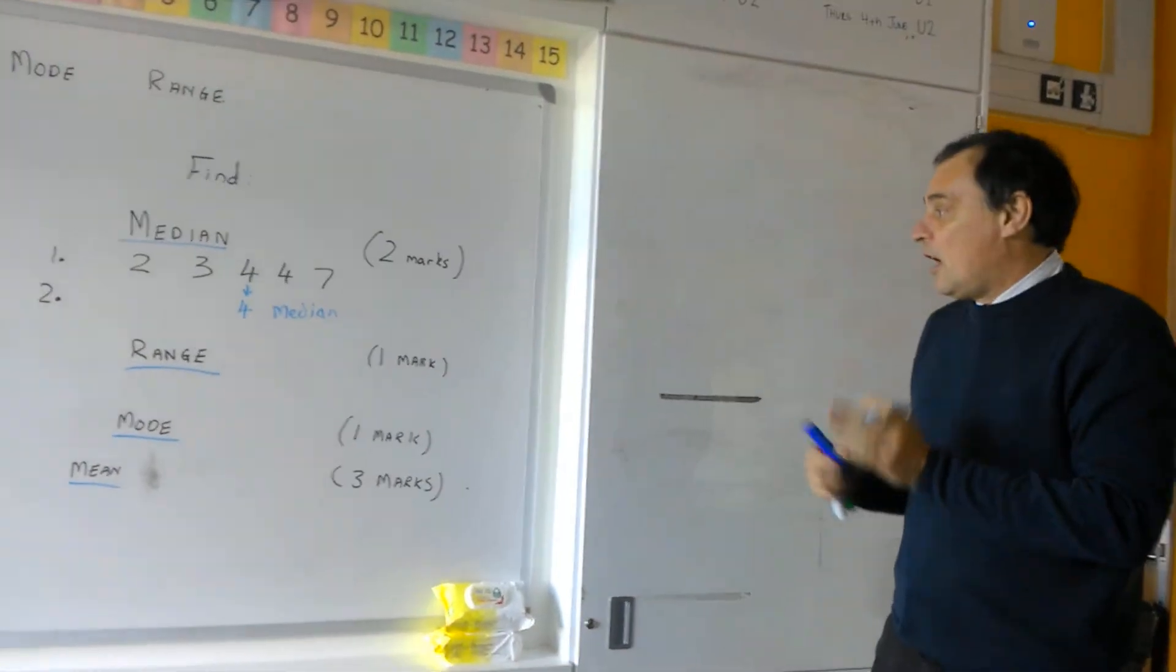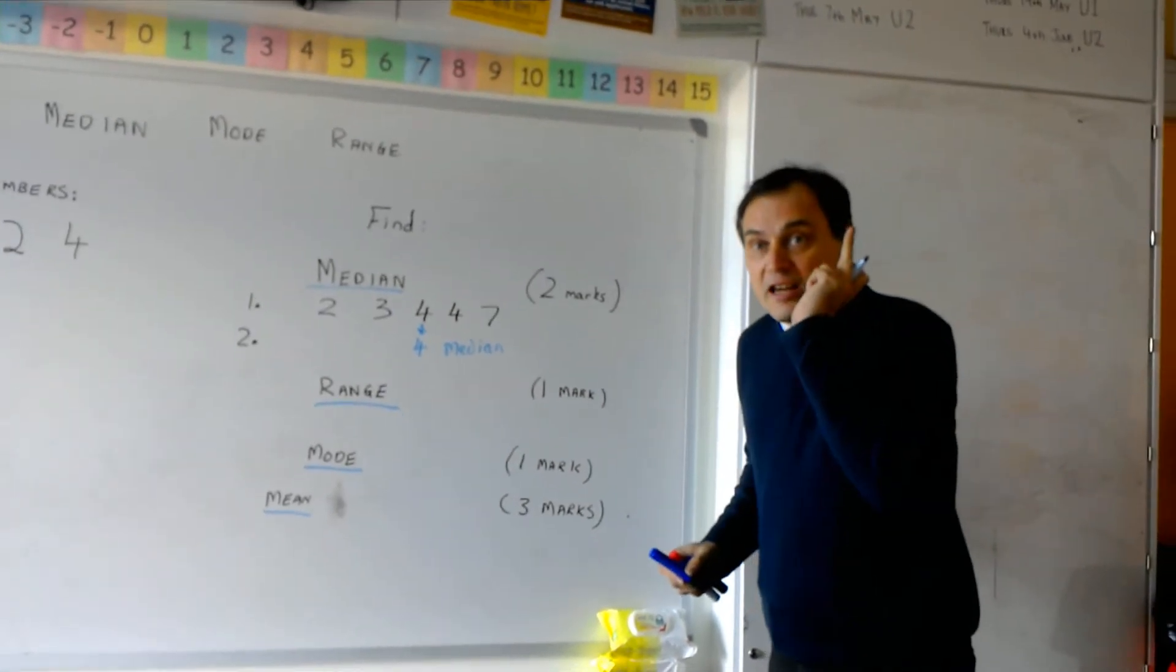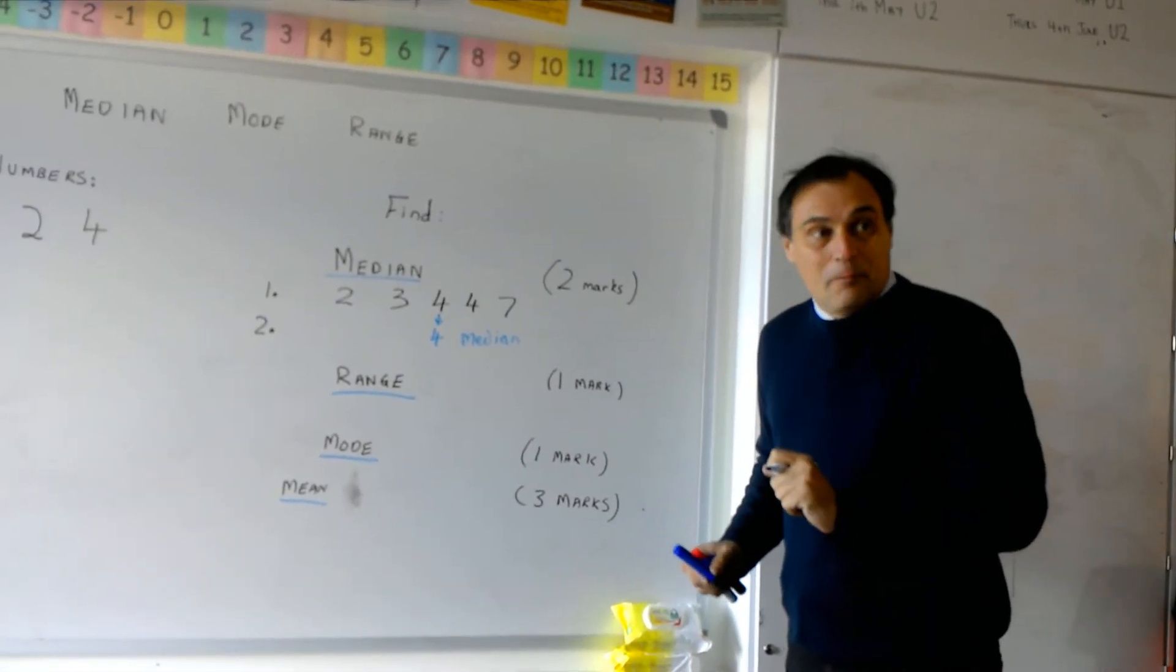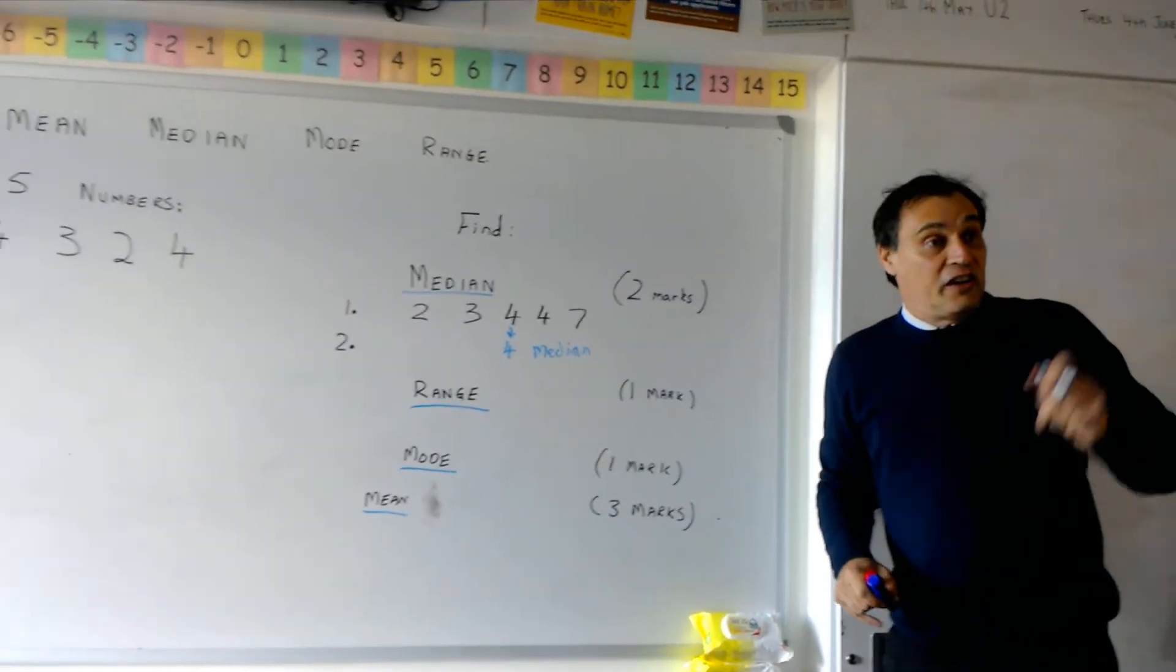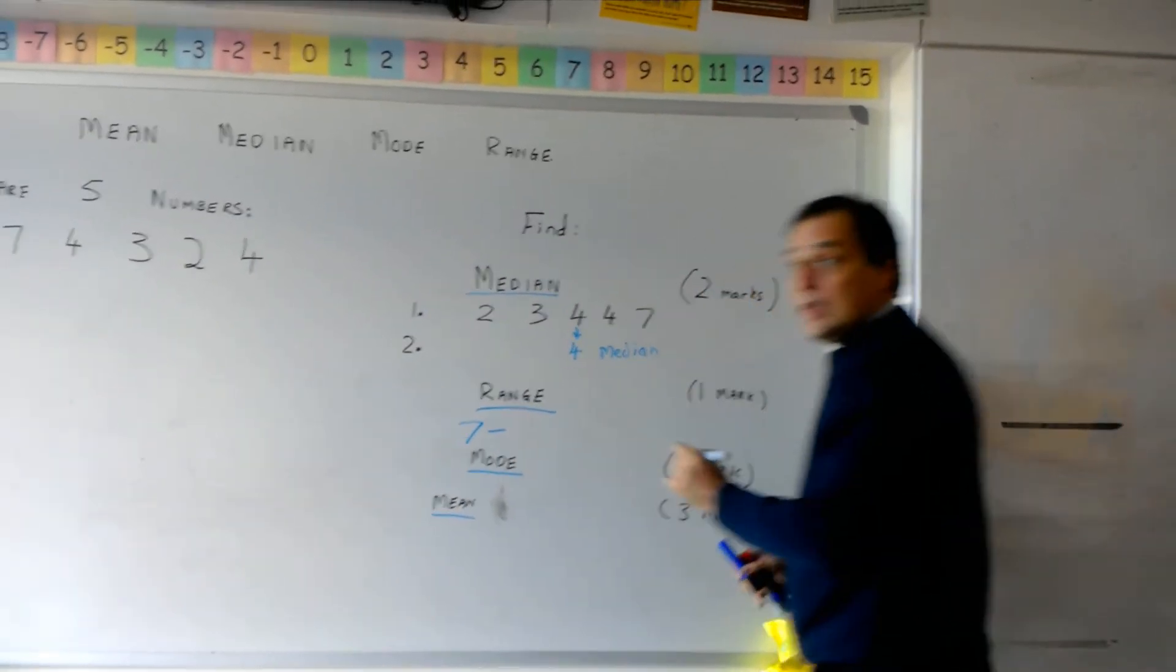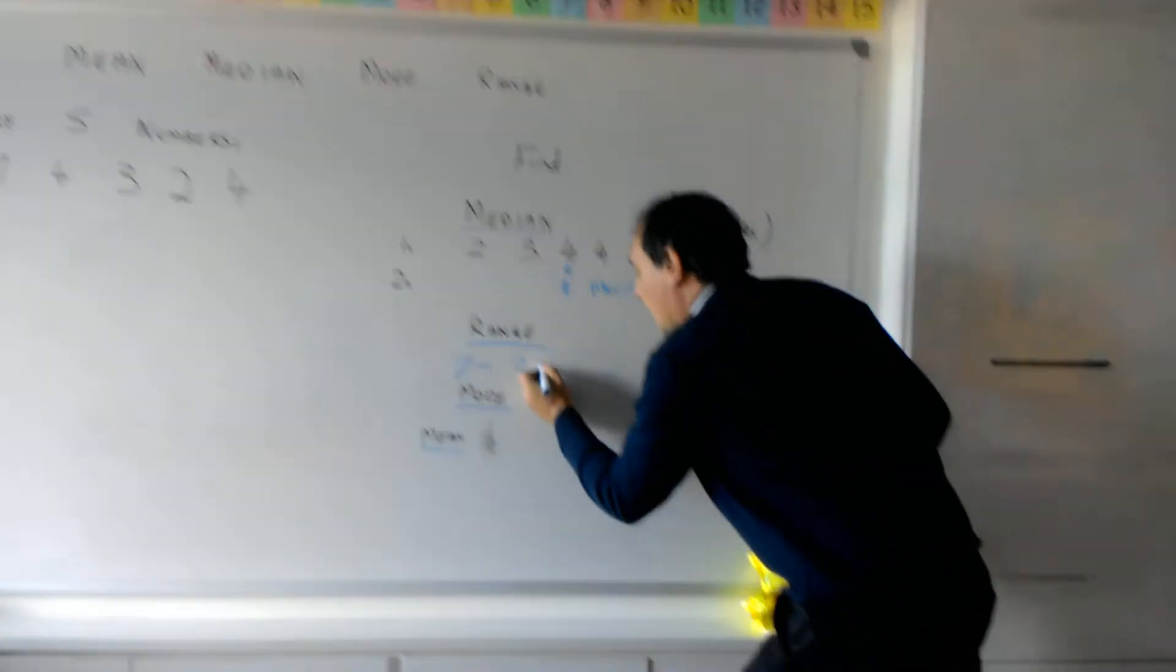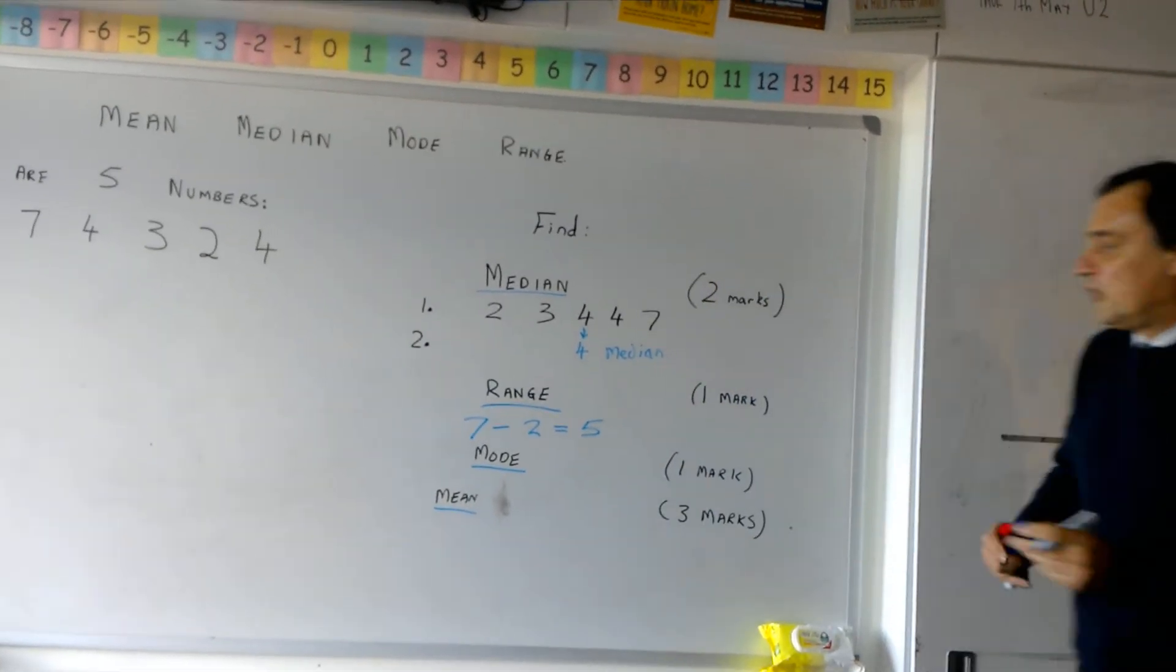The range, only going to do one thing for the range and that's what we've got to do is we've got to take away the smallest number from the largest number. So who can tell me once they're all in order what was the largest number? Seven. So we've got to do seven and then we take away? Two. Brilliant. Giving an answer of? Five. Geniuses. You must have a good teacher today. Right. Excellent.